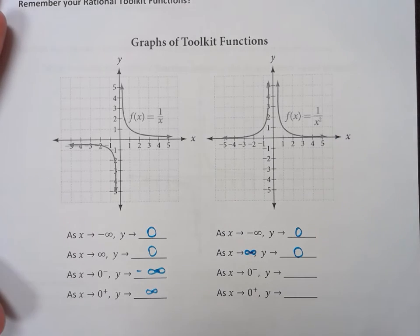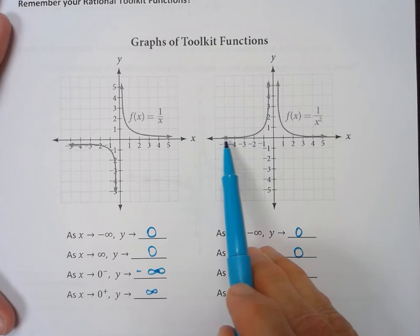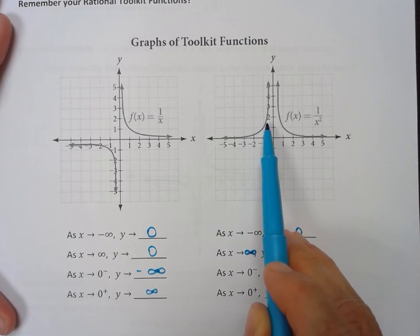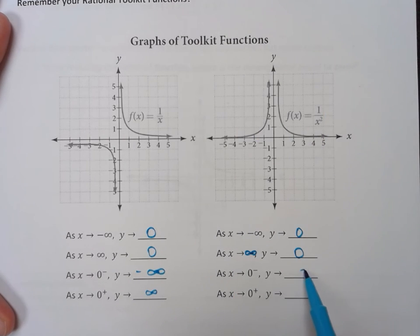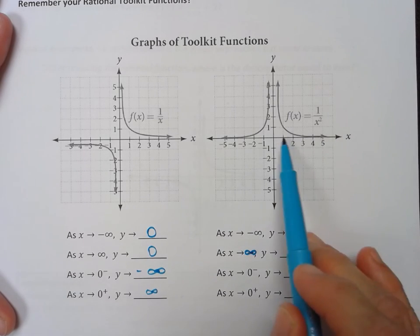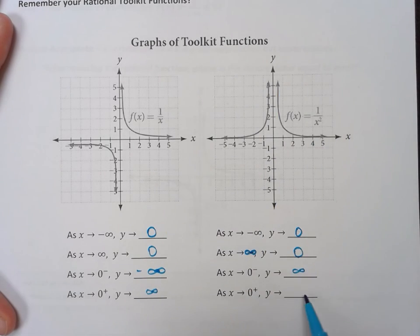So what about when x approaches zero from the left? As x is getting closer and closer to zero from the left, y is going up. So y is getting bigger. As x is approaching zero from the right, y is again going up. So y is going to infinity.